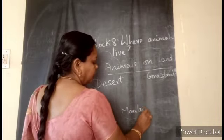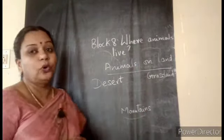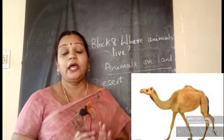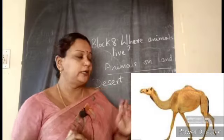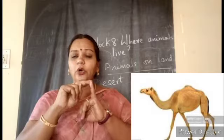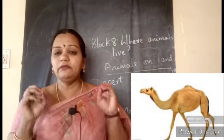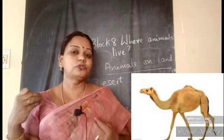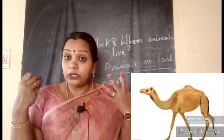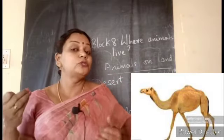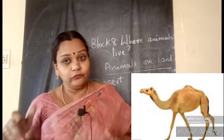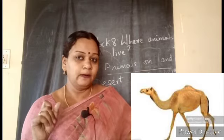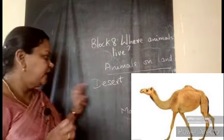For deserts — you all know that deserts are very hot places with very less rainfall and are covered with sandy soil. The animal living in the desert should be able to manage that hot weather, and also water is very scarce. It should be able to get food in such dry weather conditions and sandy soil.